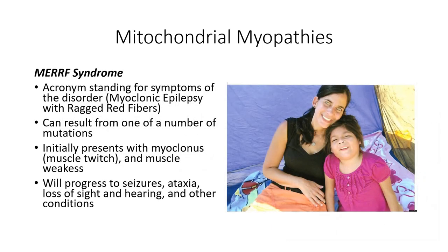MERRF syndrome is a term used to identify a collection of mutations within the mitochondrial genome that produce a similar presentation pattern. The name was coined from an acronym used to describe the findings of myoclonic epilepsy and ragged red fibers commonly associated with this condition. Symptoms may begin at any age, with the first finding typically being myoclonus or involuntary muscle jerks. Other less consistent findings related to the effects on both muscle and the nervous system include seizures, loss of coordinated body movements, and myopathy. In later stages, the patient may also develop peripheral neuropathies, muscle spasticity, deafness, and optic atrophy.